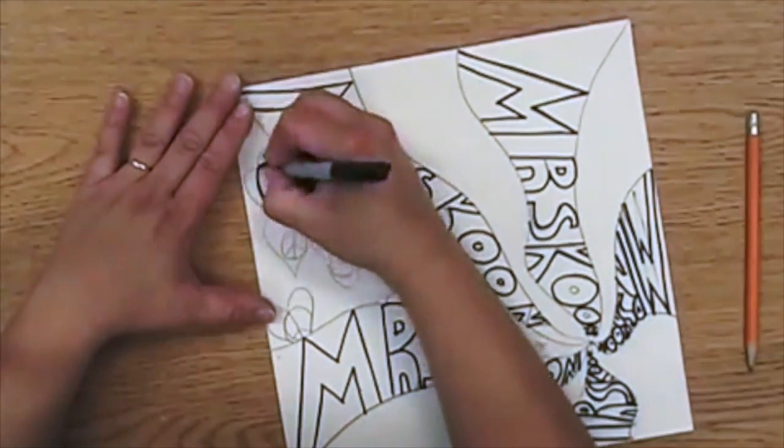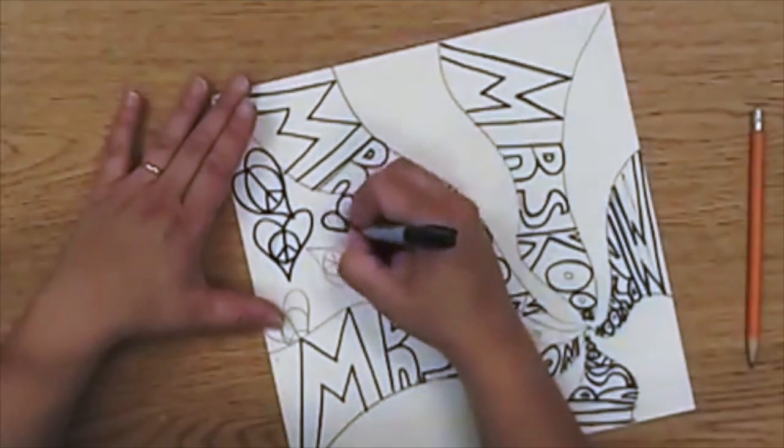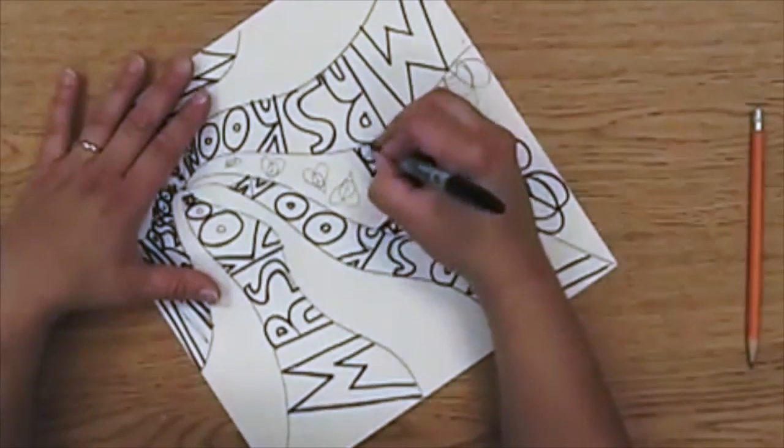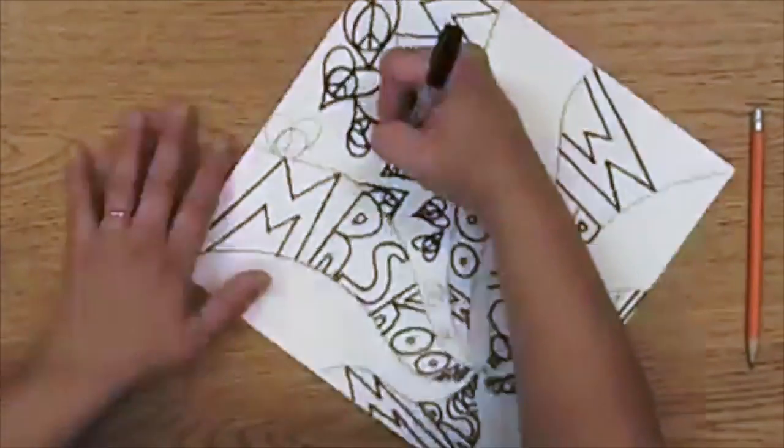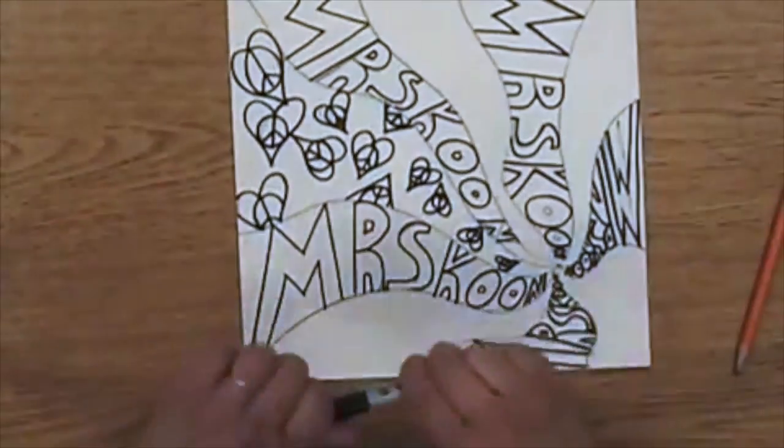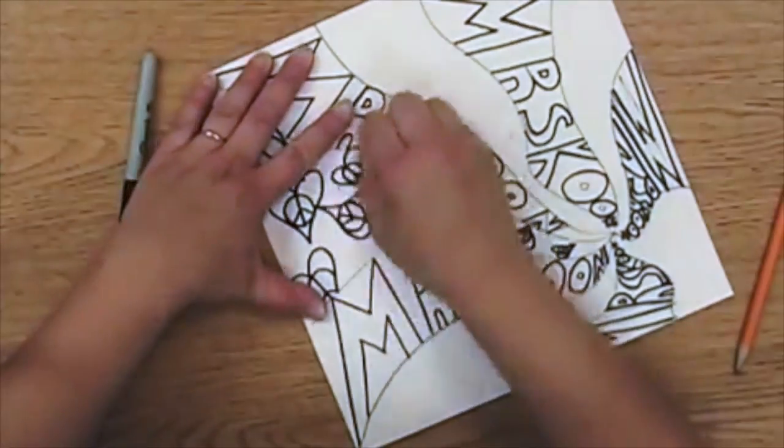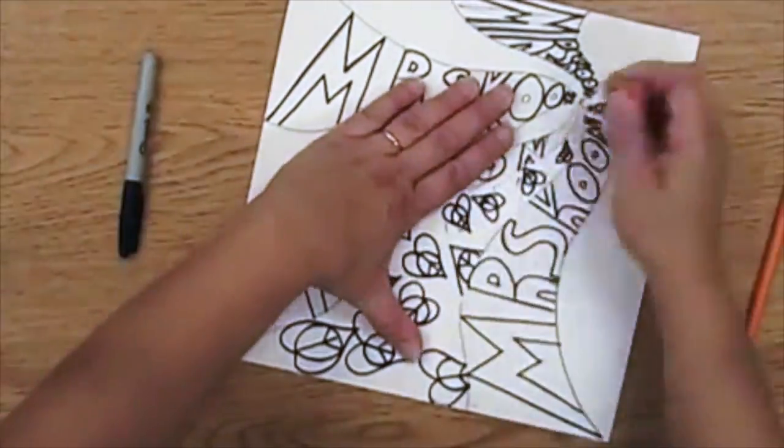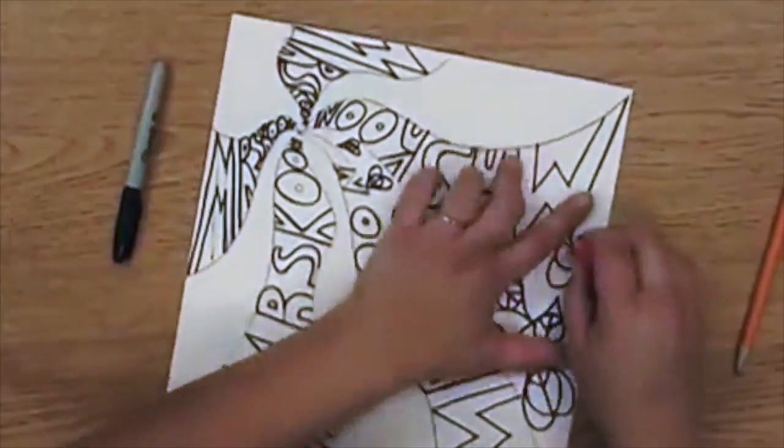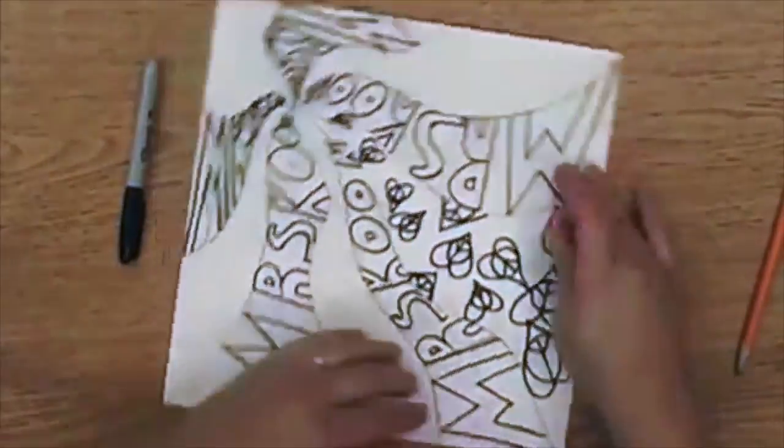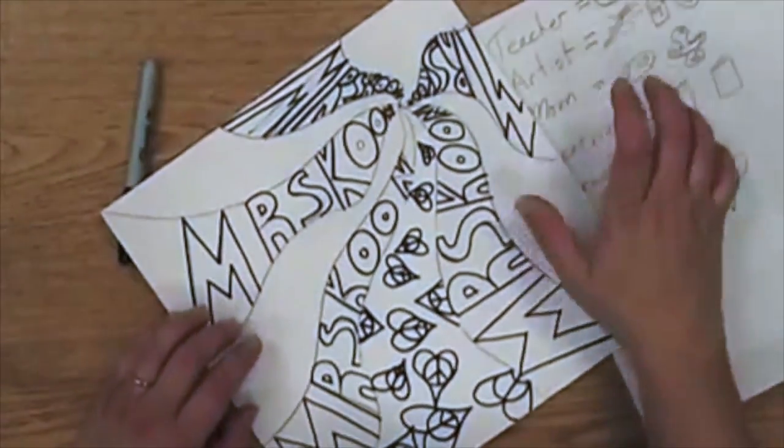Now that I've got that done I'm going to go ahead and trace this symbol in Sharpie. You could trace it in Sharpie the first time as you get each symbol done or you could do all pencil and then all Sharpie, either way it's up to you. We're going to trace this all in Sharpie.